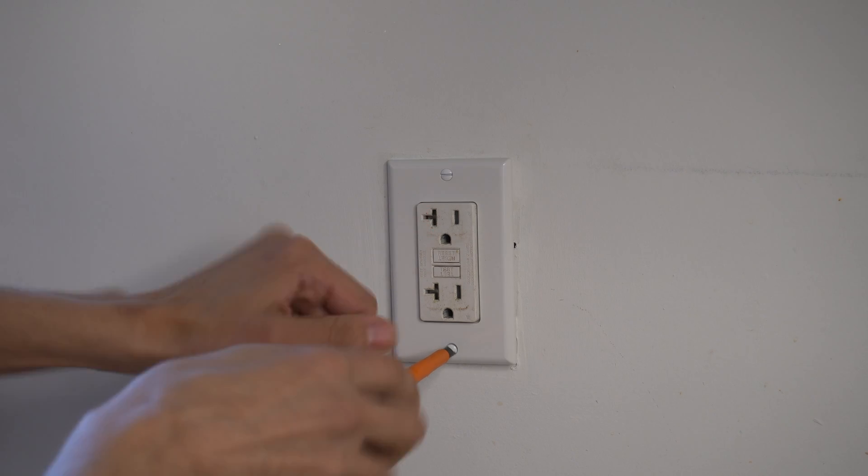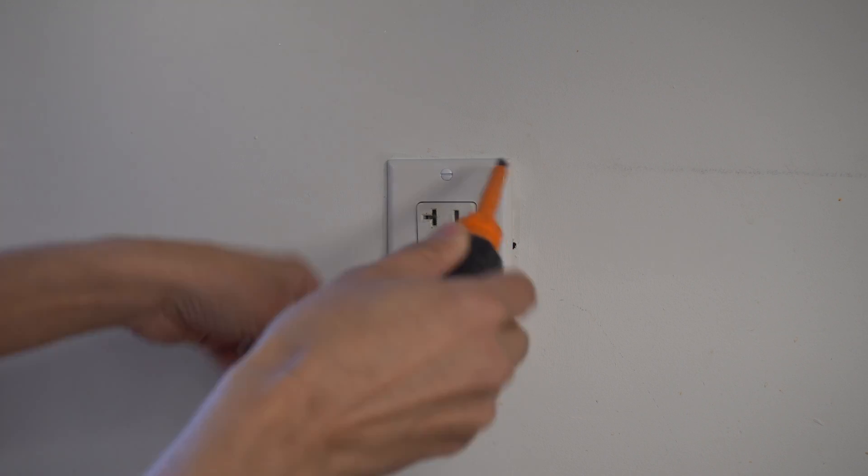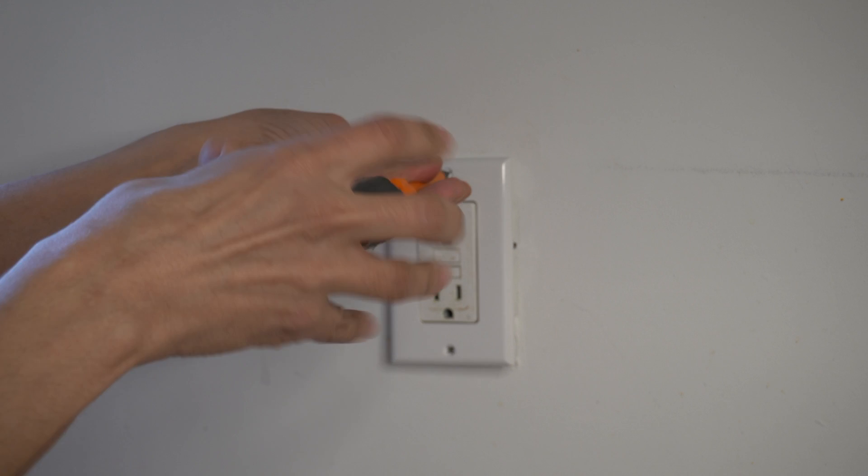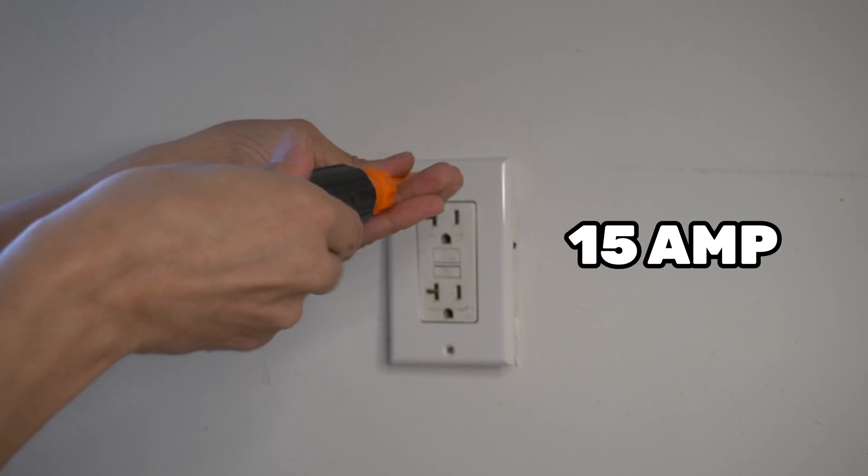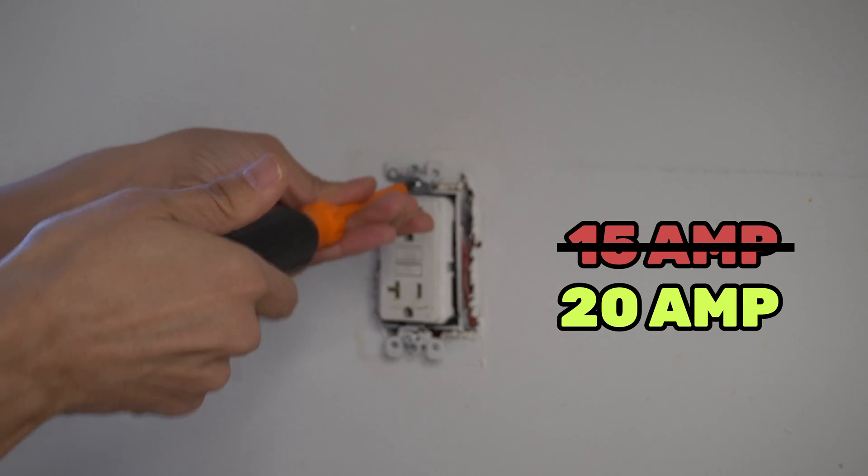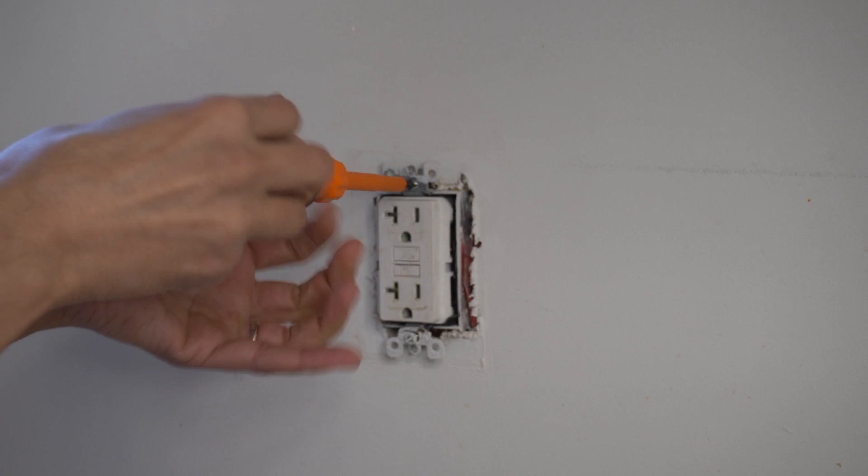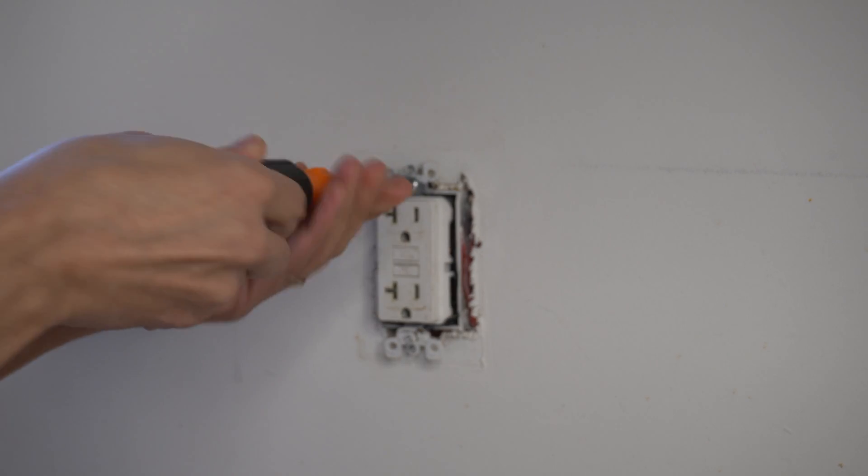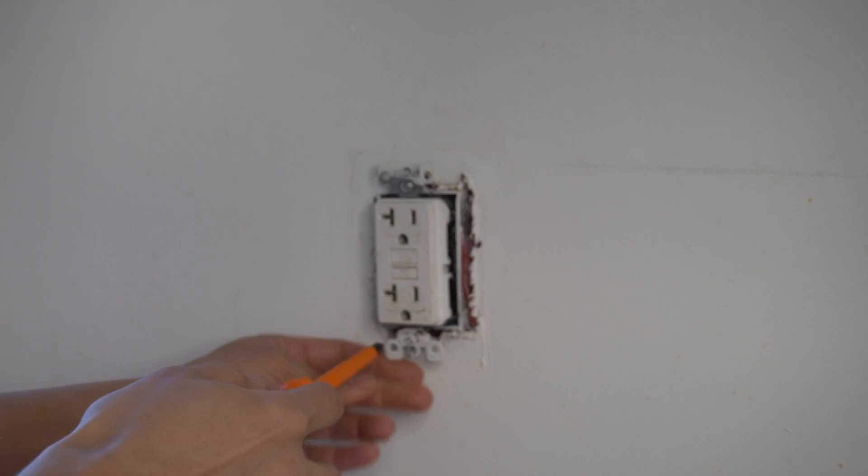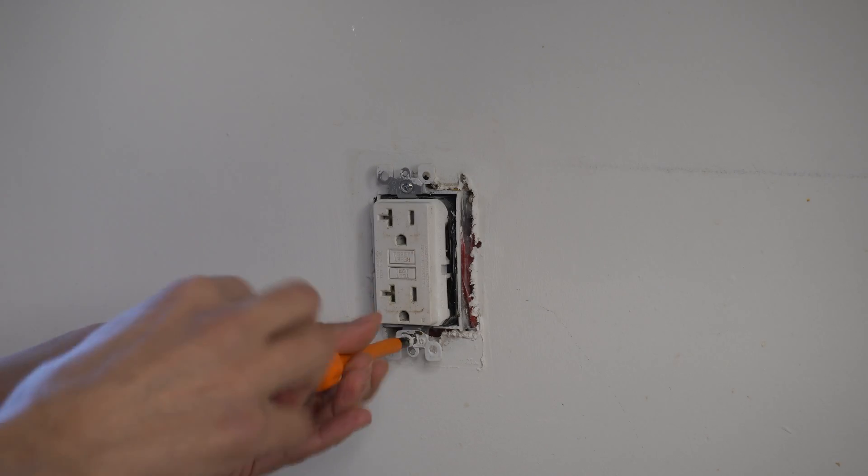That T slot tells me this receptacle has been upgraded from a 15 amp which is standard in older homes to a 20. I can already see something about this receptacle that I like. Now GFCIs are very wide and very deep, and as you can see here I have a metal box and there is a line of defense that I like to see that most electricians will do when working with metal boxes.